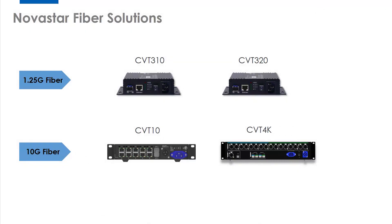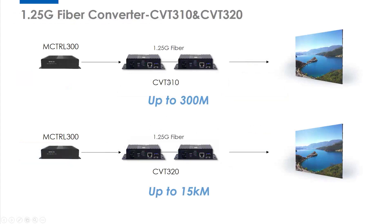So now let's get some more details about these four converters. For CVT310 and CVT320, they are both 1.25G fiber converters. The main difference is CVT310's transmission distance is up to 300 meters. And for CVT320, its transmission distance is up to 15 kilometers. So CVT320's transmission distance is much farther.